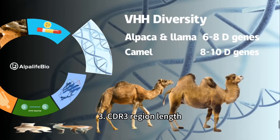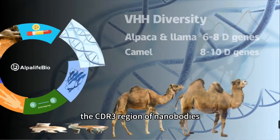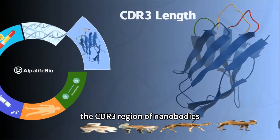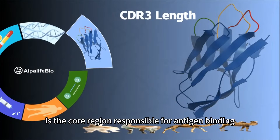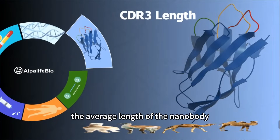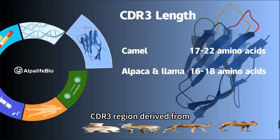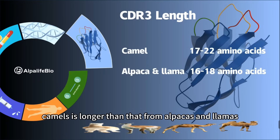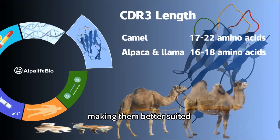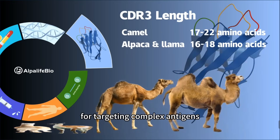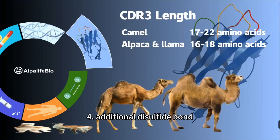3. CDR3 Region Length: The CDR3 region of nanobodies is the core region responsible for antigen binding. The average length of the nanobody CDR3 region derived from camels is longer than that from alpacas/llamas, making them better suited for targeting complex antigens.